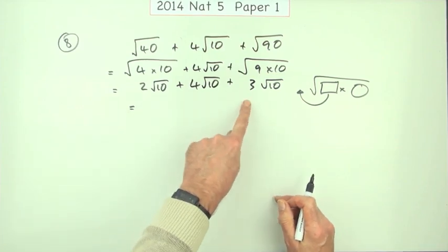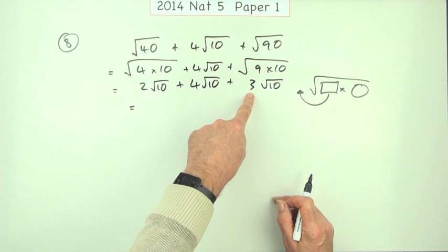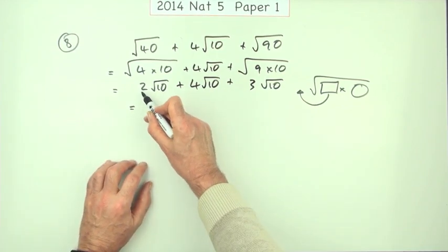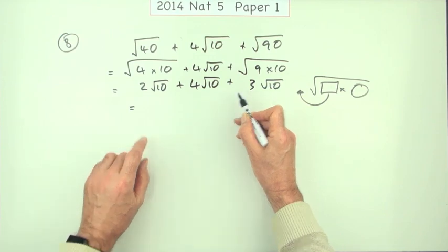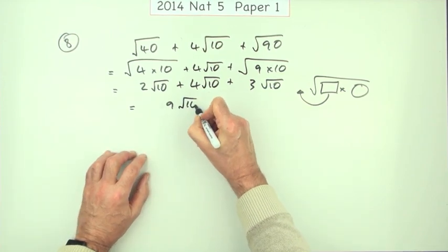Now I've got three things that are the same. I've got two root 10s, four root 10s, three root 10s—I don't actually, they're root 10s. I've got 2 plus 4 plus 3, so that's 9 lots of root 10.